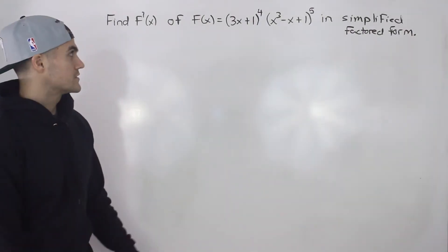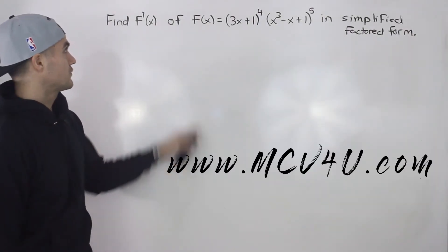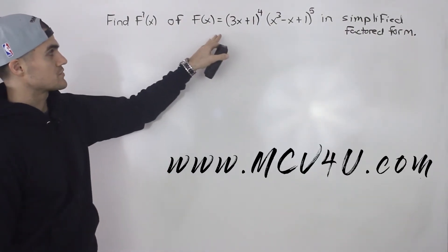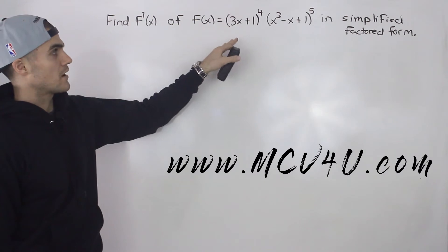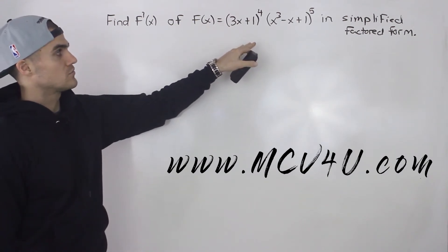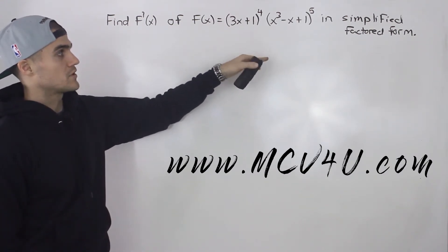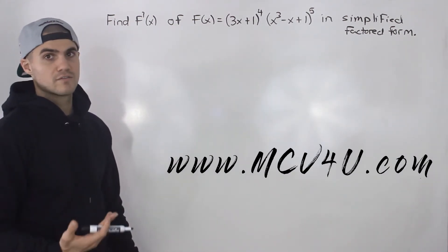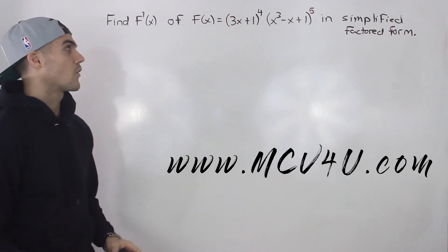Welcome back, everybody. Moving on to the next question, we have to find the derivative of f of x equals 3x plus 1 to the power of 4, times x cubed minus x plus 1 to the power of 5, in simplified factor form.